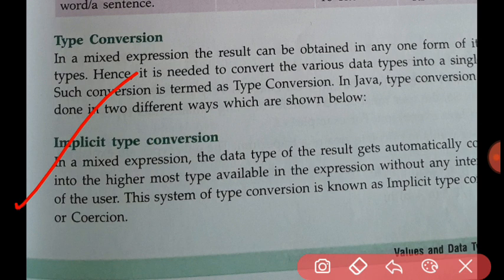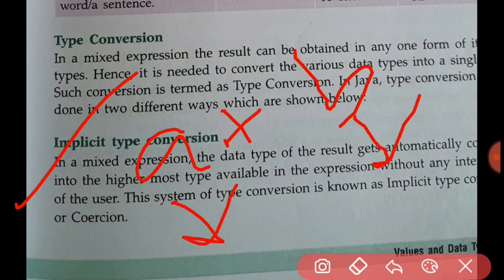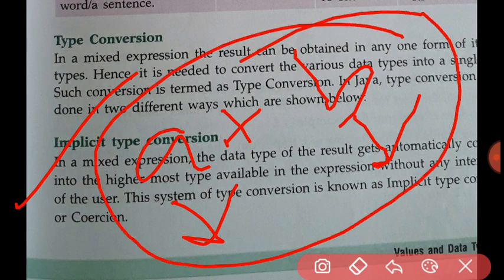In implicit type conversion, the data type of the result is converted internally by the compiler into the highest data type. For example, a is of integer type which is four bytes and b is of double type which is eight bytes, so the result will be converted into the double data type — that is eight bytes. This is called implicit type conversion.